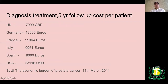The economic burden is significant. Looking at European countries, the average cost per patient in the UK for diagnosis, treatment, and five-year follow-up is £7,000, compared to £13,000 in Germany, around £11,000 in France, £9,000 in Italy and Spain, and approximately $23,000 USD in the USA. It is a huge economic burden to diagnose, treat, and follow these patients.